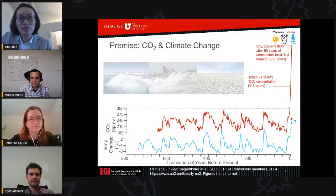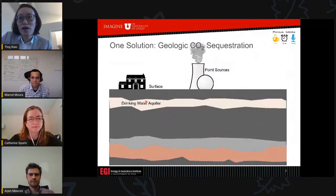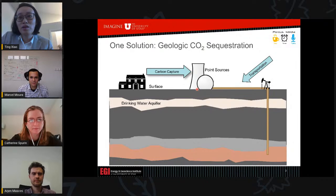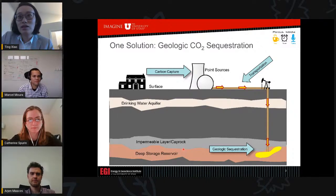With climate change, more severe weather will occur very often, and habitats of human beings and other creatures might be largely impacted. One idea for mitigating CO2 emissions is to capture CO2 from centralized sources such as power plants, transport it by pipelines, and inject it into deep storage reservoirs overlaid by an impermeable layer called caprock. This idea is called carbon dioxide capture and geologic sequestration.